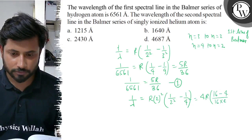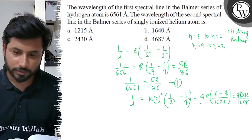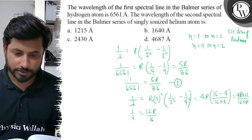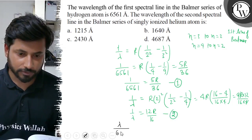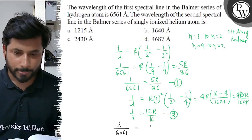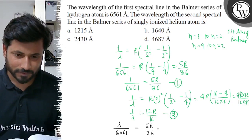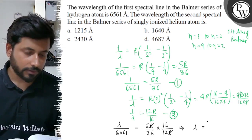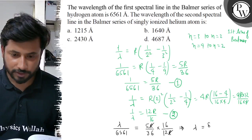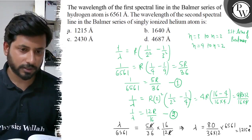Now taking the ratio using equation 1 and equation 2: lambda divided by 6561 equals 5 divided by 36, times 16 divided by 12, with R cancelling out. So lambda equals 6561 times 16 times 5 divided by 36 times 12, giving us finally 1215 angstroms. So the final answer is option A: 1215 angstroms.